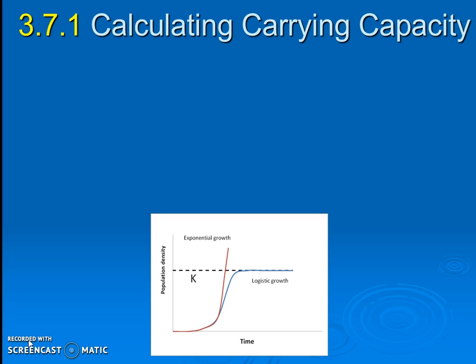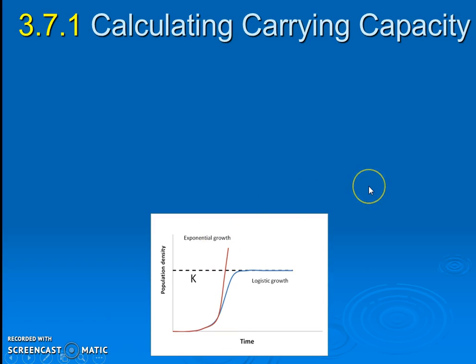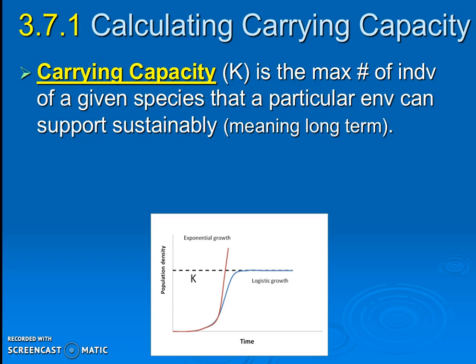Earlier in our unit we were learning about carrying capacity and different types of growth curves. We have our J growth curve, which is exponential, and our S curve, which is logistic. We know the human population looks a little bit more like the J curve, but things get a little complicated when we calculate it, so let's review carrying capacity in general.